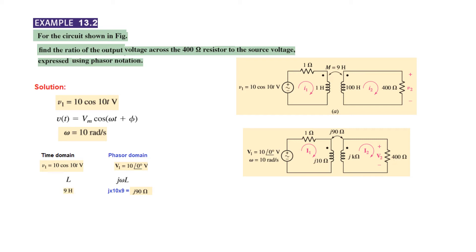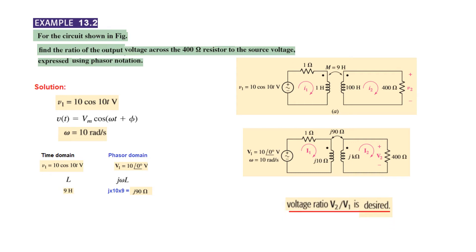Converting all inductors: the 1 H inductor becomes jωL = j×10×1 = j10 Ω, and the 100 H inductor becomes j×10×100 = j1000 Ω (or j1 kΩ). Resistance remains the same. Voltages and currents become capital letters in phasor domain. We need to find the ratio of output V2 to input V1.